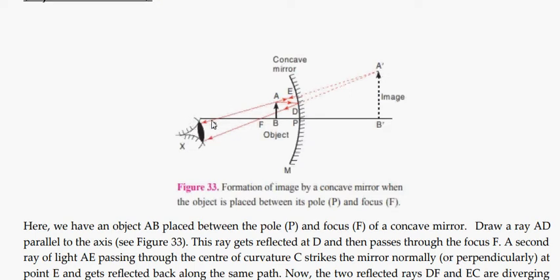When we extend them behind the mirror with dotted lines, they meet at point A dash. If the object is at position X, the tip of the object appears at A dash. So the image of this object is behind the mirror, enlarged in size, in the same direction, erect, and since rays don't actually reach there, this is a virtual image.